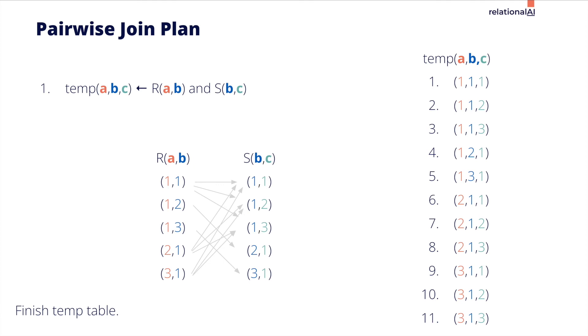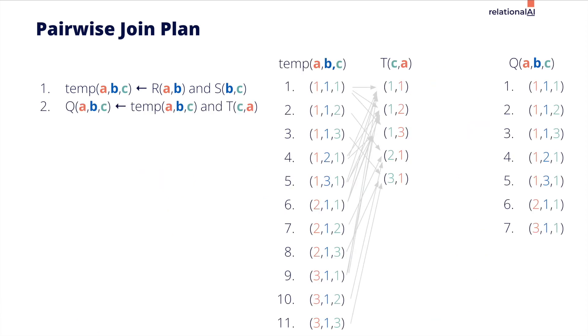With the temp table created, it then performs a similar join of the temp table to the last table T to get our results. Notice that the temp table is larger than both the input and the output. Creating this table can require significant memory and time.